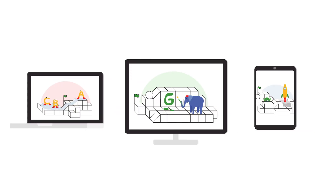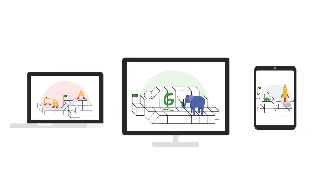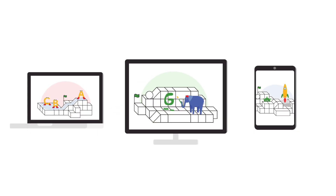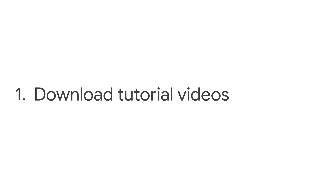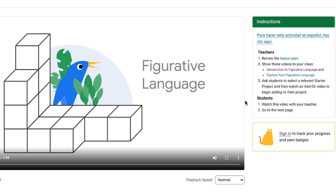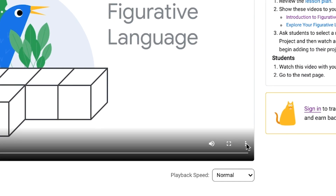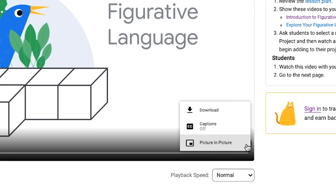To use CS First, it's easiest if each student has access to a device like a laptop, computer, or tablet. Internet access is preferable for streaming videos, but if your students' homes have low connectivity, don't worry. Students can download the tutorial videos for their activity before starting. If you're operating on a hybrid learning schedule, you can help students download videos to their devices before they head home.